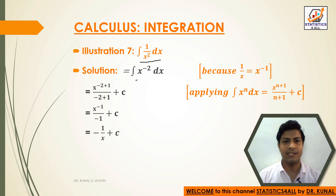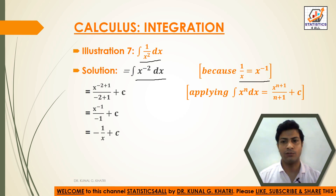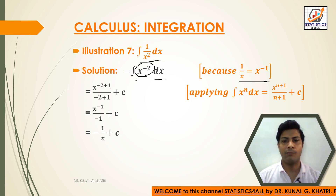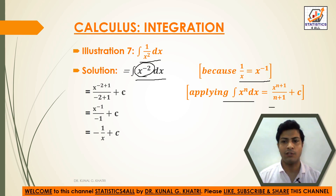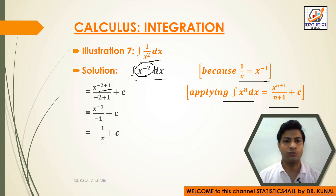Illustration number seven: integral of 1 upon x squared dx. Here we can write this as integral x to the minus 2 dx, because we know that 1 upon x equals x to the minus 1. Since x to the minus 2 is present, we apply the formula: integral x to the n dx equals x to the n plus 1 upon n plus 1 plus c.